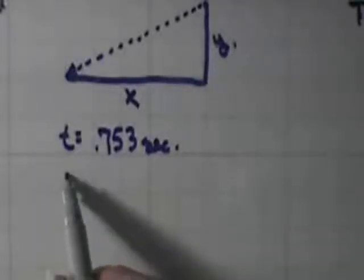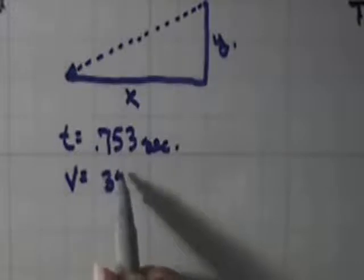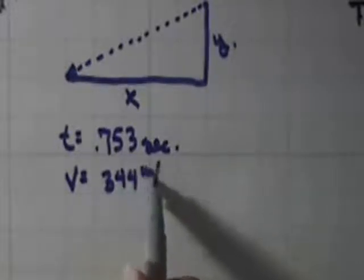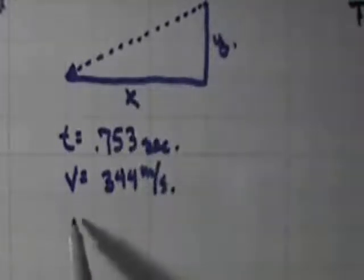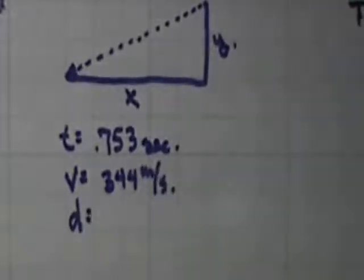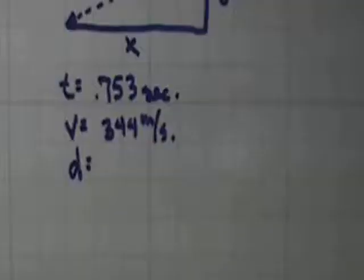We know that the speed of sound is a constant at that temperature, and it's about 344 meters per second. We want to find the distance that the sound traveled. What distance did the sound travel in that period of time? Go ahead, give it a try.